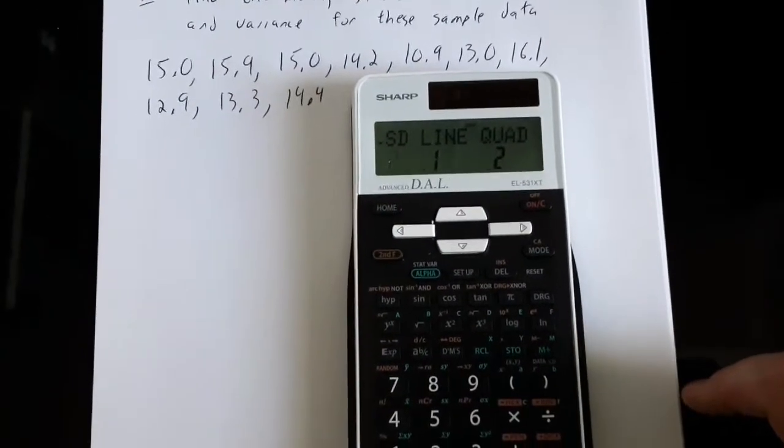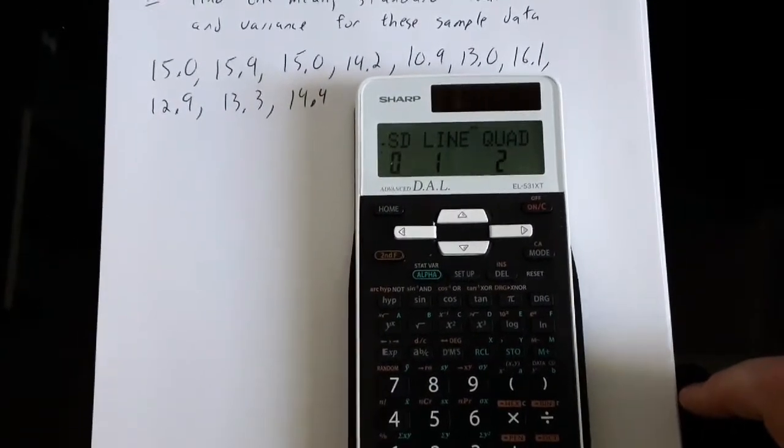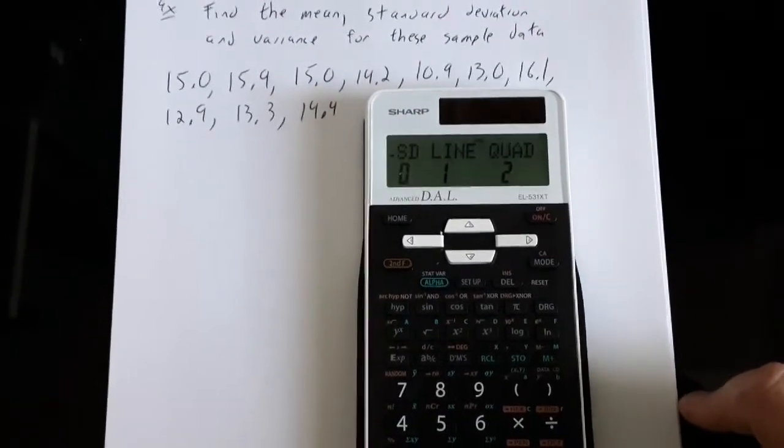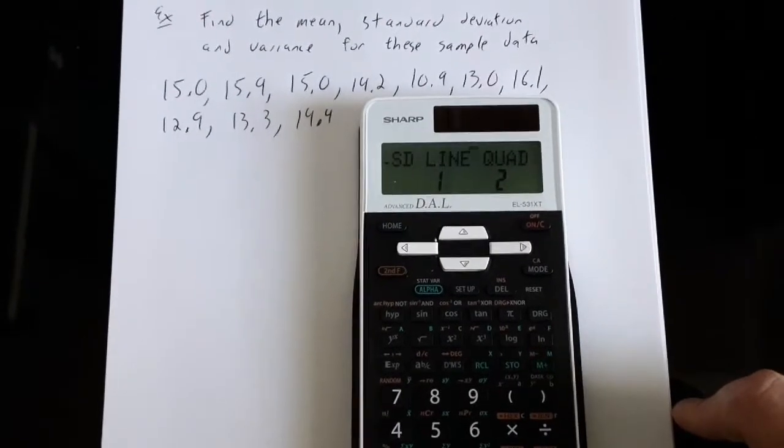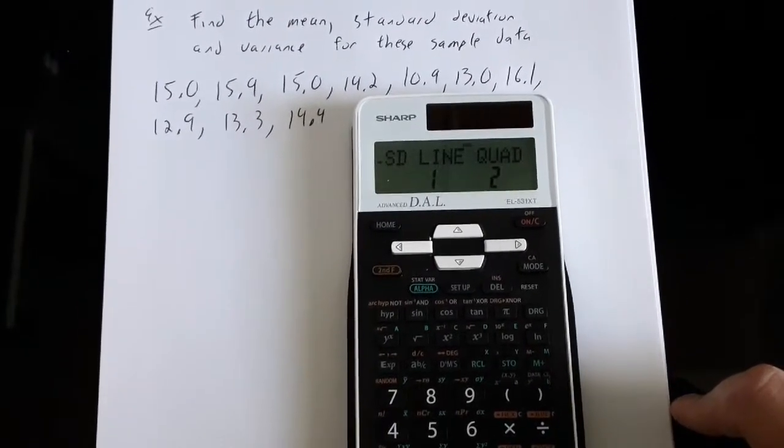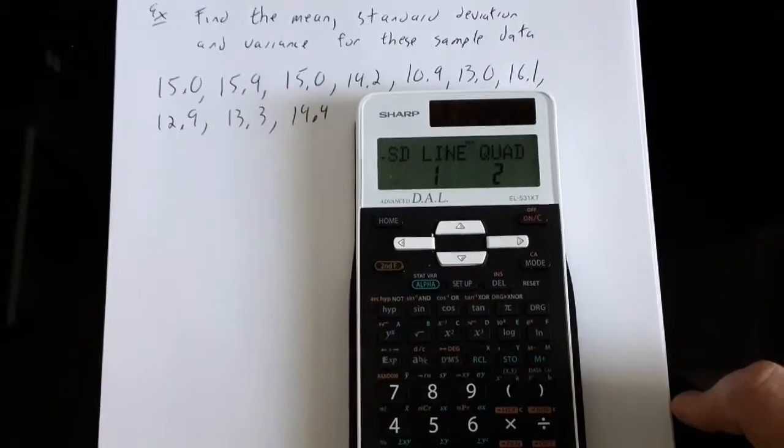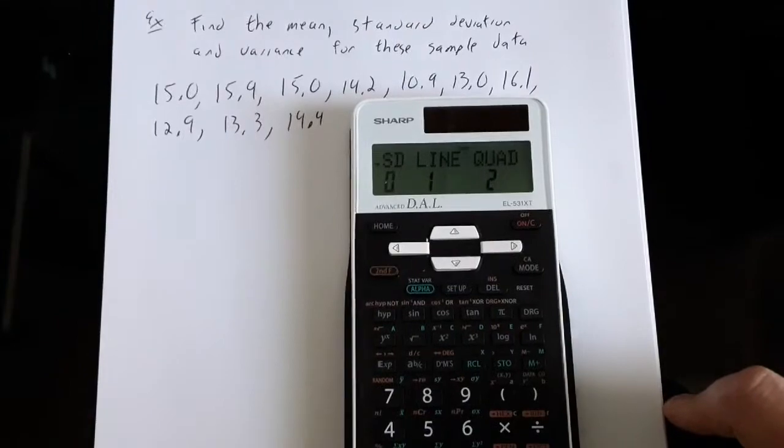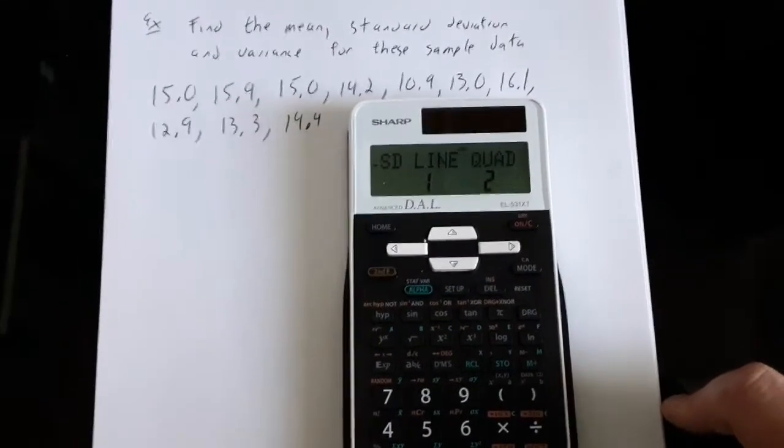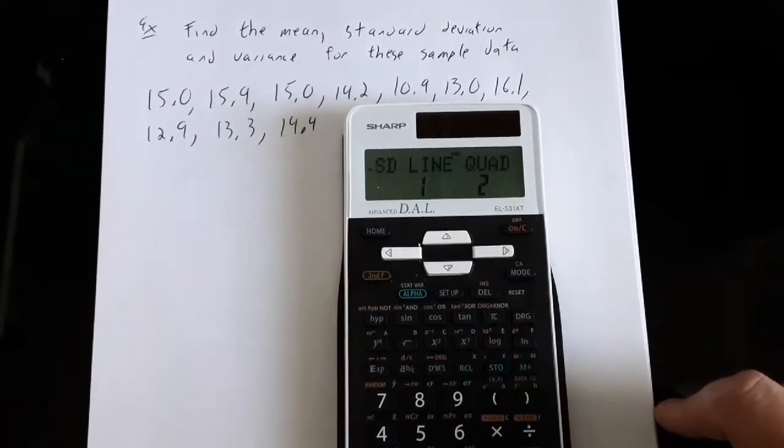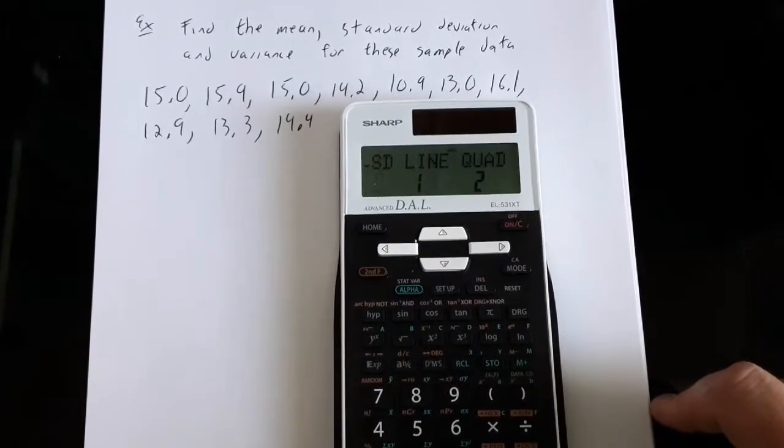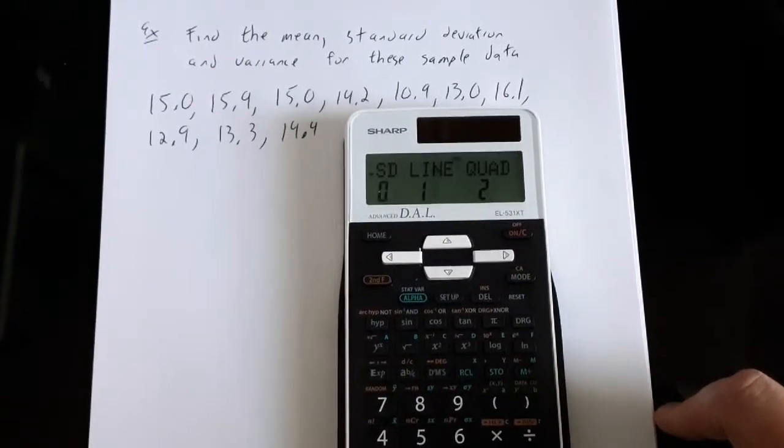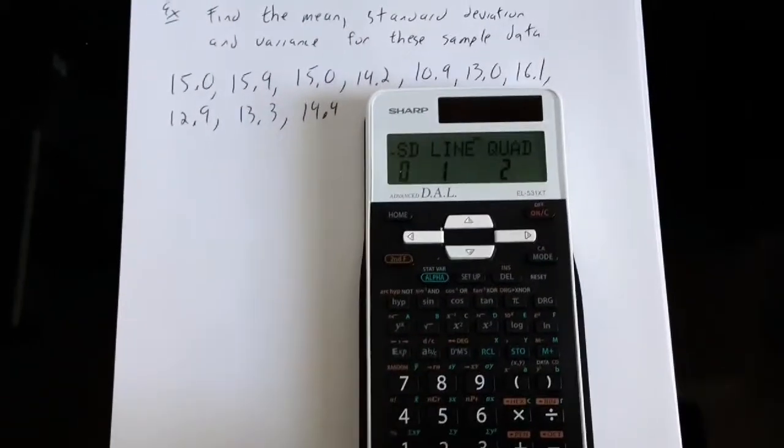And then it'll ask me which kind of stats mode do I want to be in. There's SD, that would be if we're finding means and standard deviations. There's line, that would be if we were looking at a linear model, which is what we'll be doing when we get to chapter 8. Number 2, that would be if you were looking at a quadratic model, which is not something that's part of this course. So for this course you're only going to need to know how to put yourself in stat mode 0, finding means and standard deviations, or in stat mode 1 for linear models when we're in chapter 8. So I'll choose 0.